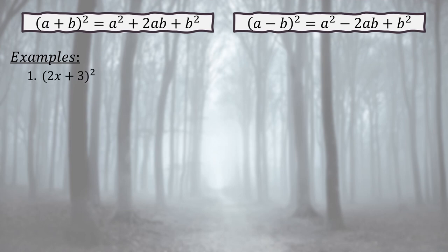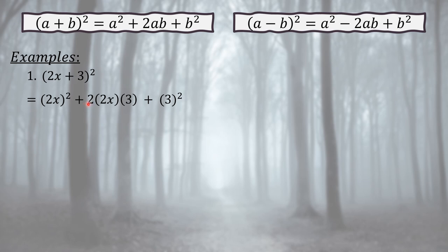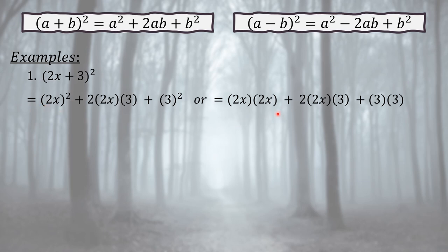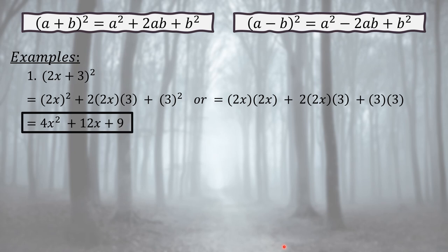Example: (2x + 3)². Applying the formula: (2x)² + 2(2x)(3) + 3². This becomes 2x times 2x, plus twice the product of 2x and 3, plus 3 times 3. Simplifying: 4x squared plus 12x plus 9. Note: 2 times 2 times 3 = 12 (copy the variable x), and 3 squared = 3 times 3 = 9 (not 3 times 2).